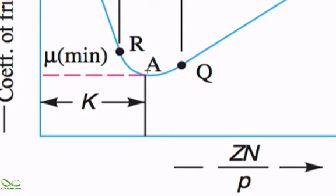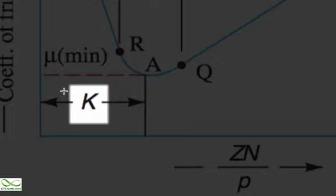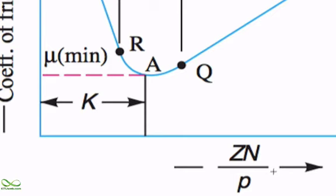Within this graph we can identify one important thing: at point A we have the minimum coefficient of friction. The value of ZN/P on the X-axis corresponding to the minimum coefficient of friction is known as the bearing modulus, here denoted as K. Bearing characteristic number means the dimensionless quantity ZN/P; bearing modulus means the exact value of the bearing characteristic number at which minimum coefficient of friction is obtained.